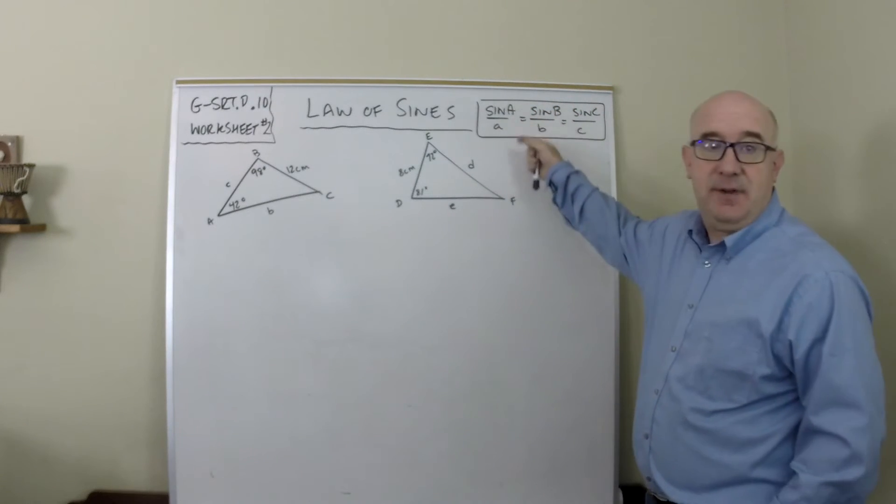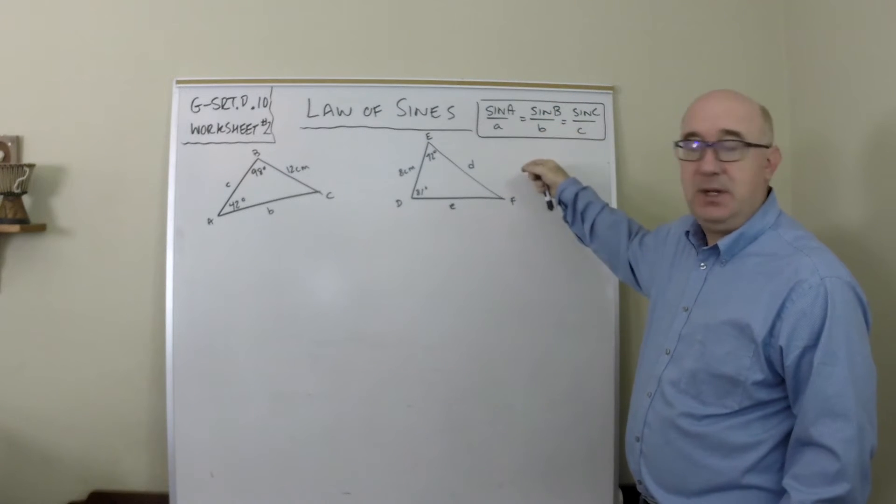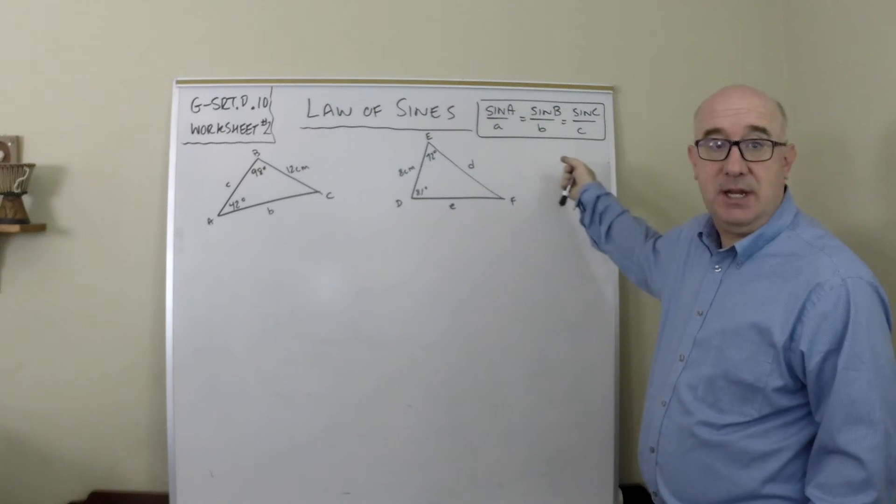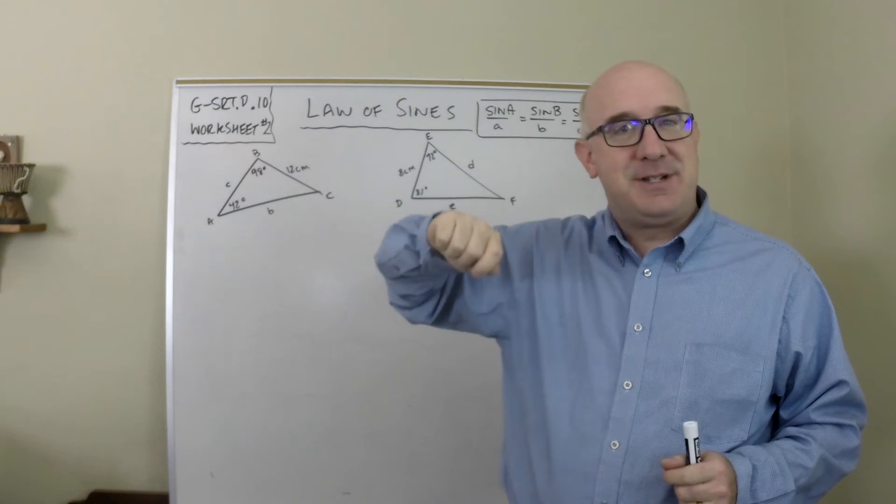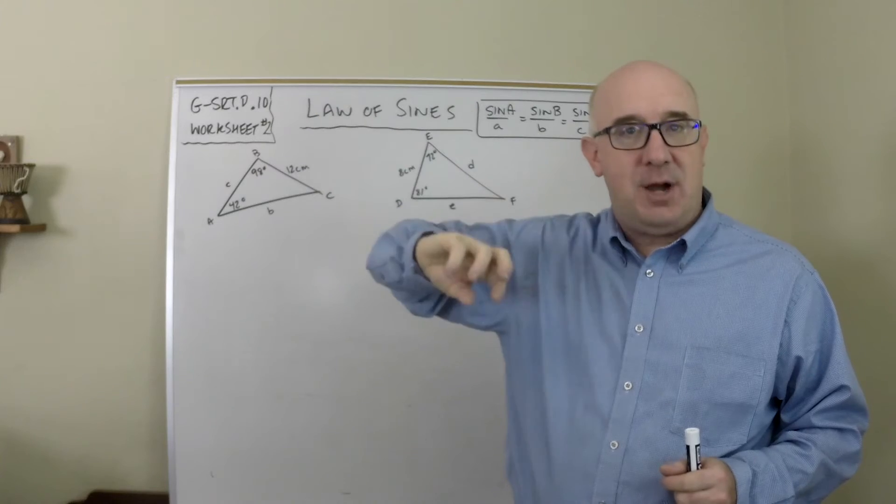So the law of sines is sine of A over a equals sine of B over b, sine of C over c. These proportions are easy to remember because it's the angle over its opposite side.